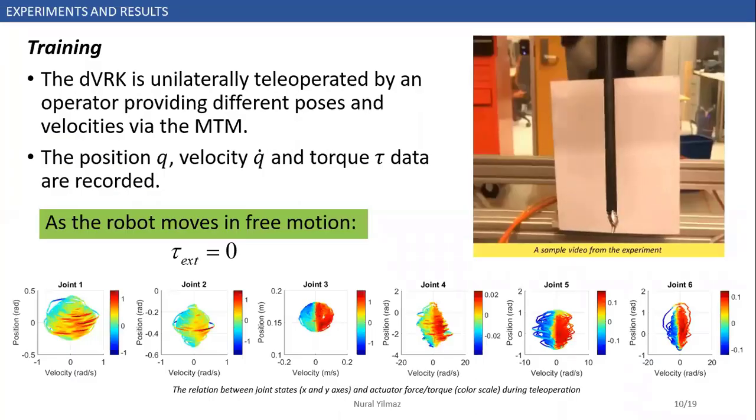In training, the PSM was moved by providing different poses and velocities via the MTM, and this operation was realized by unilateral teleoperation. You can see this training motion in the video, by the way. In order to train a network, we recorded position and velocity signals for input neurons, torque signals for output neurons. Approximately, we gathered 415,000 samples for this procedure.